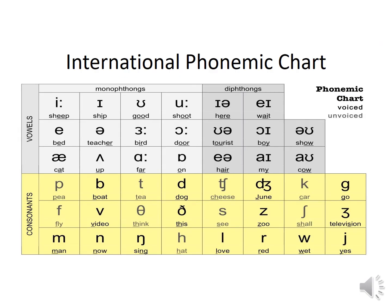Here you can see the International Phonemic Chart. This chart is all about phonemic sounds. There are three sections, as you can see — the light gray color, the dark gray color, and the light yellow color — three colors, as you can examine here. In these three sections, two types of sounds are described.